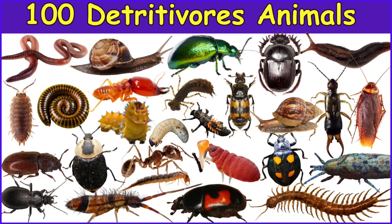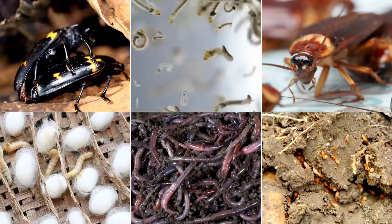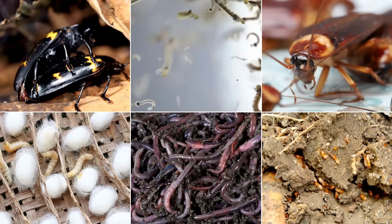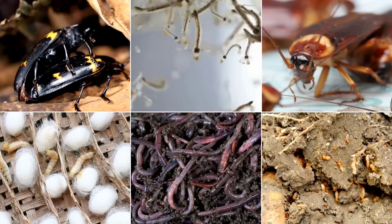Hello everyone, do you know, based on their food habits, animals are divided into 4 groups: herbivores, carnivores, omnivores, and detritivores.